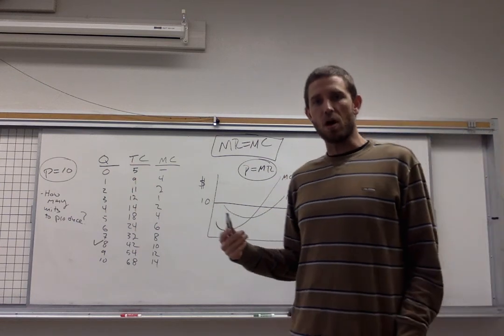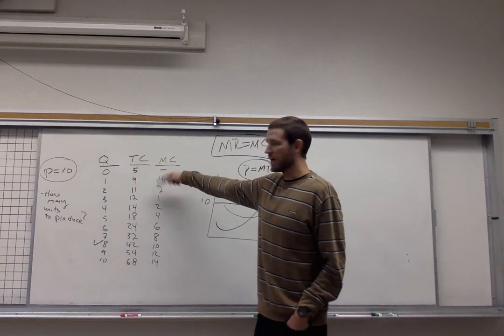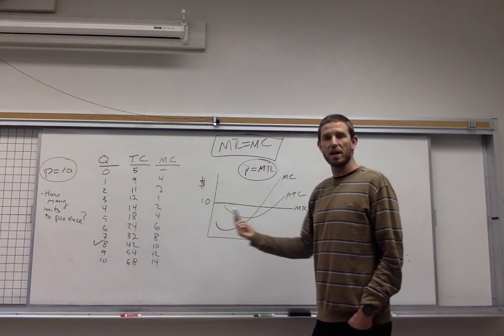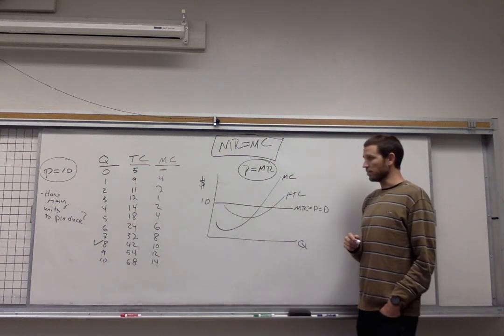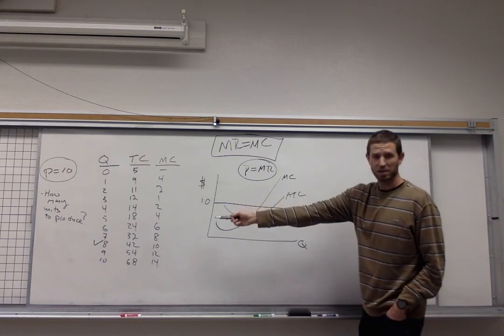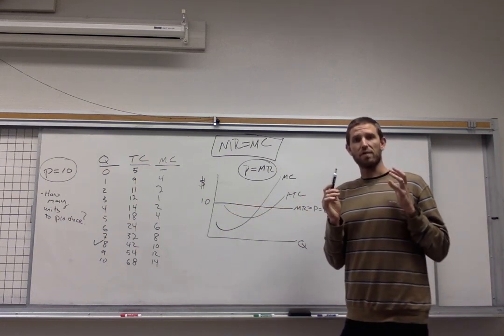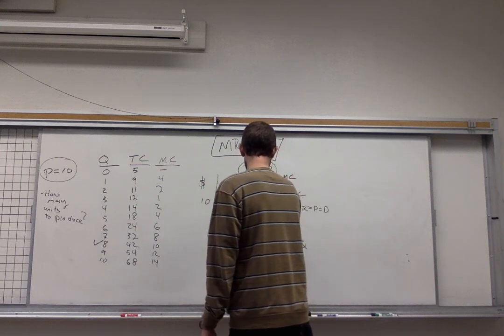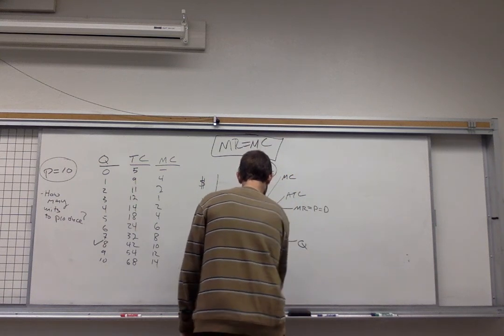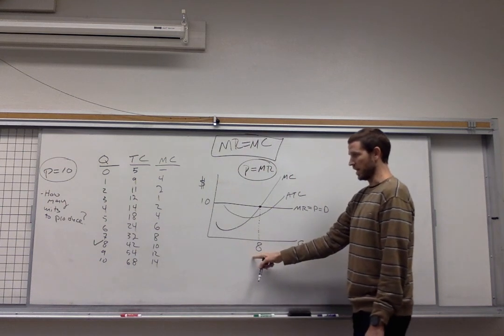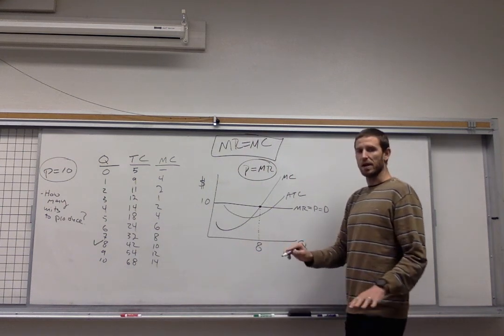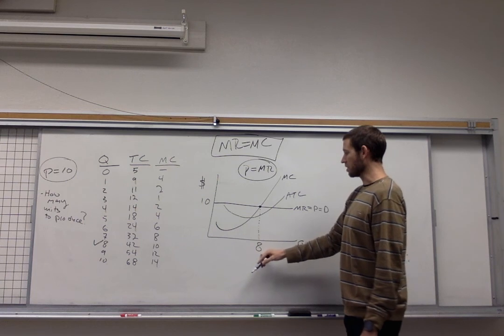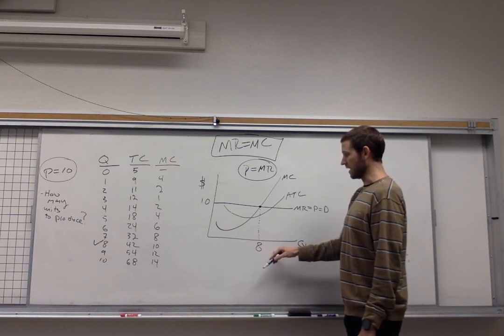So using the same logic we were talking about with the tables here we want to find which quantity is profit maximizing for this firm. We just established that that's going to be the eighth unit where marginal revenue equals marginal cost. So that should correspond with this particular spot right there. The firm should keep producing up to the eighth unit, stop right there, and not go on to producing units nine and ten.